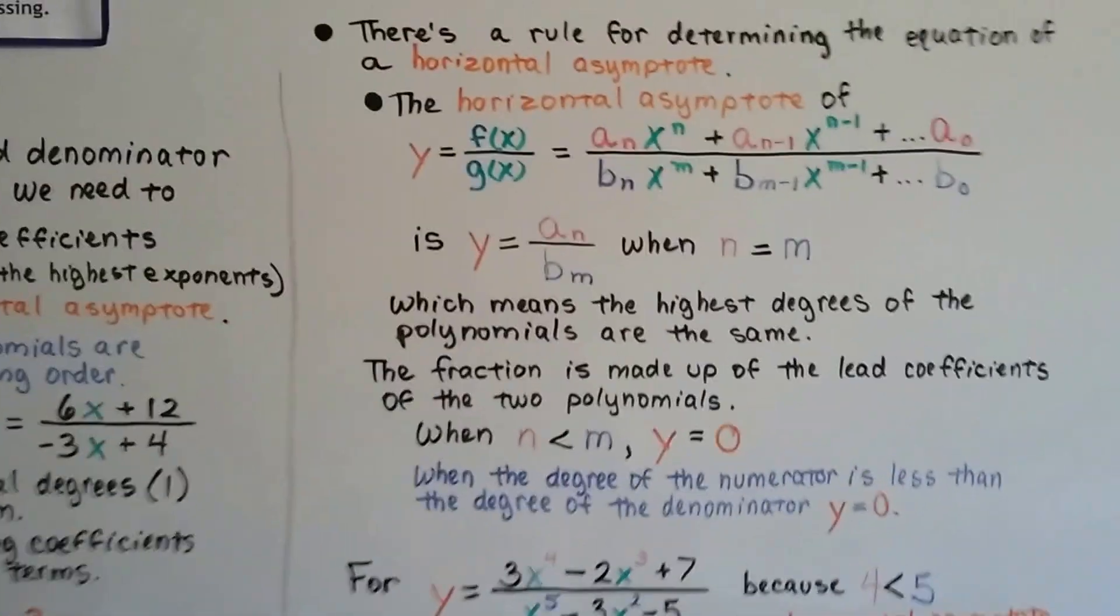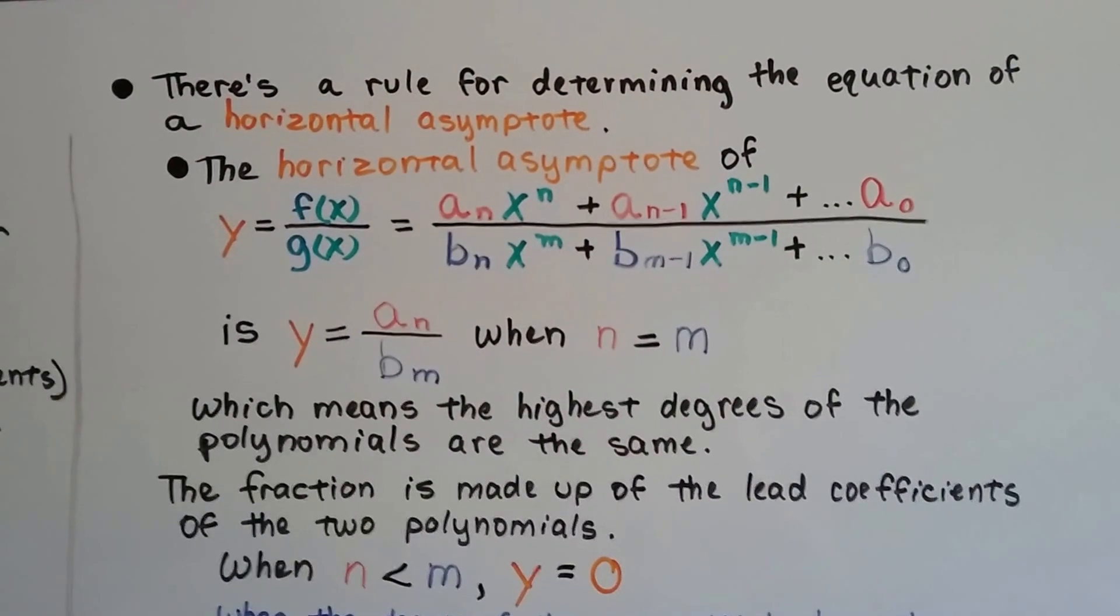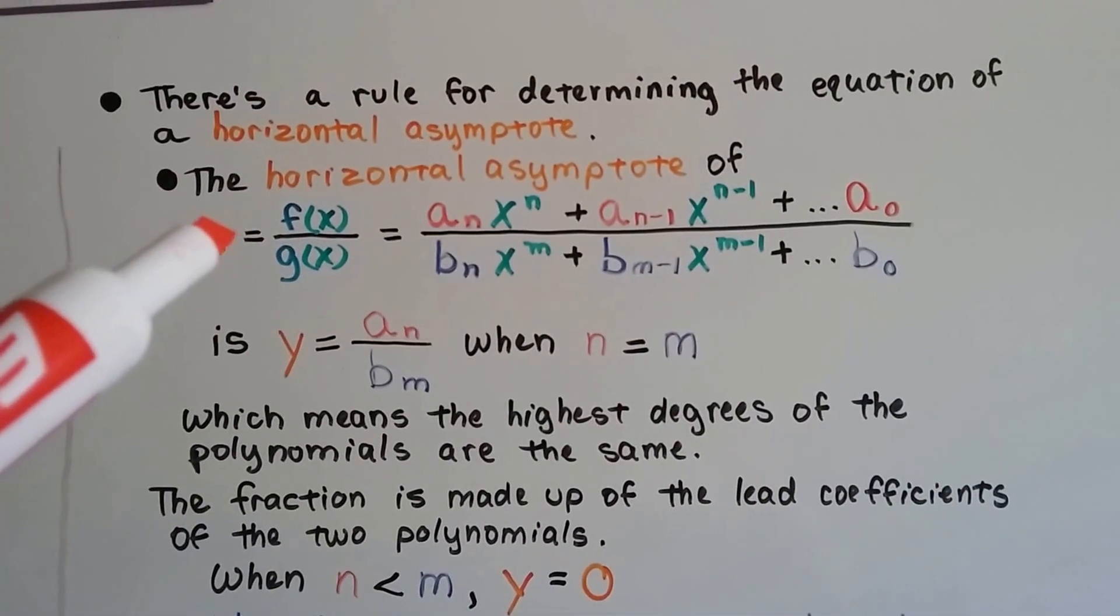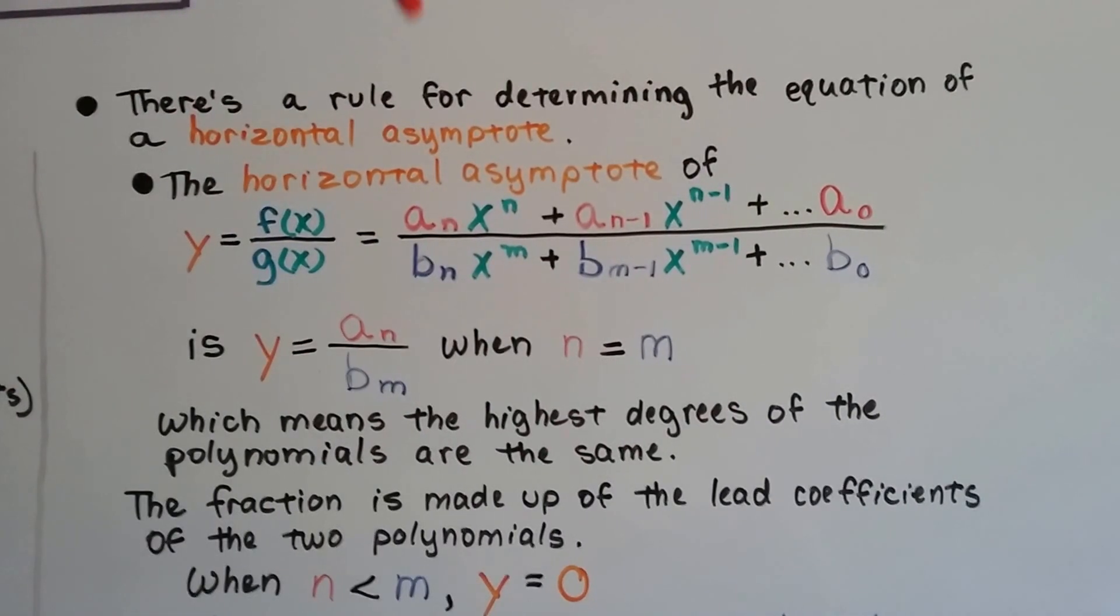There's a rule for determining the equation of a horizontal asymptote. If we've got y equals the quotient of f(x) and g(x), look at it this way.